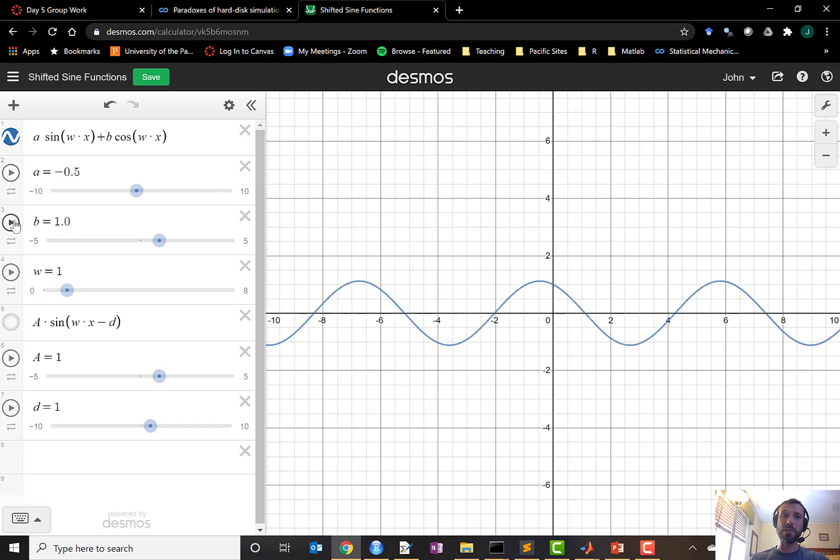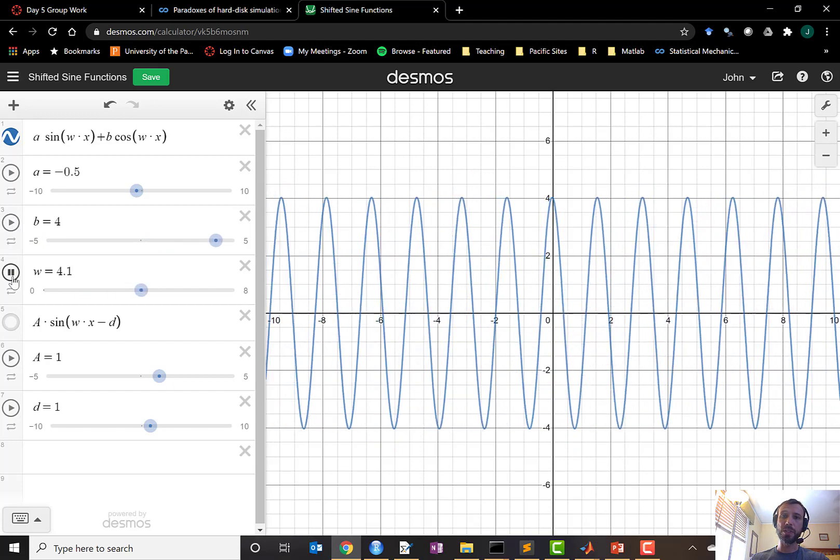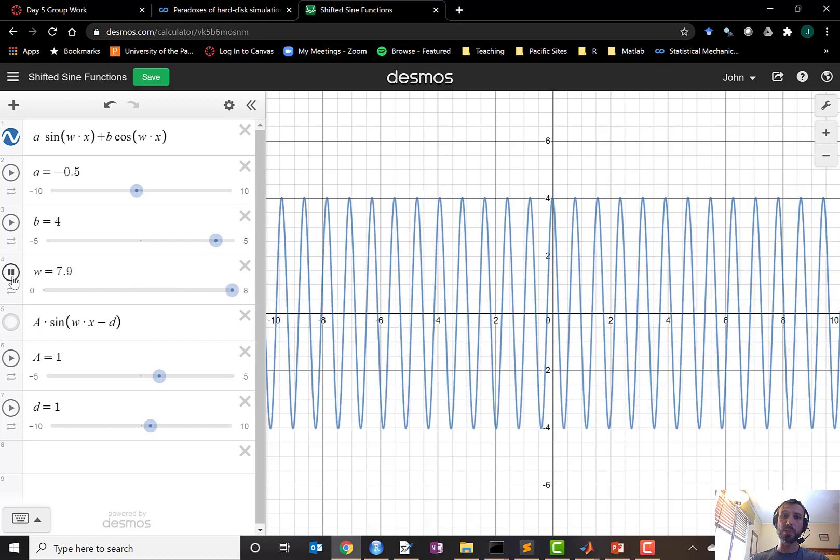Similarly, if I vary the coefficient b of cosine, the amplitude will also increase or decrease with b. Of course, w controls the frequency or the period of the resulting wave as well.